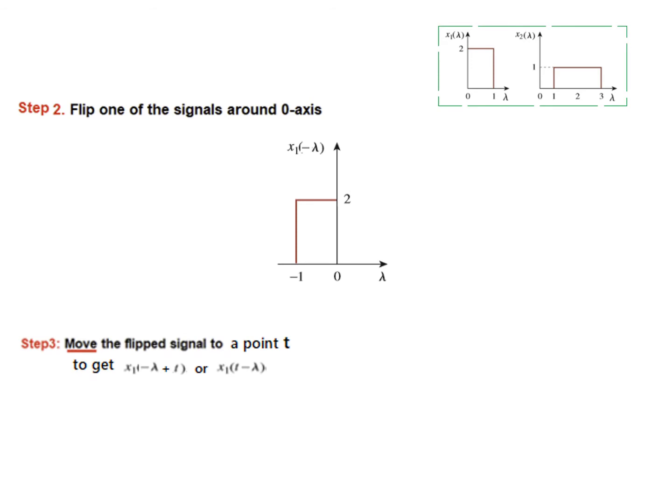So now the name will change to x minus lambda. And the third step is that move the flip signal to a point t. Now point t could be anywhere. It is an arbitrary point. The only thing we will do is change this name to t. So 0 has now been named t and so minus 1 will be t minus 1. And this signal will change now to x2 of t minus lambda.